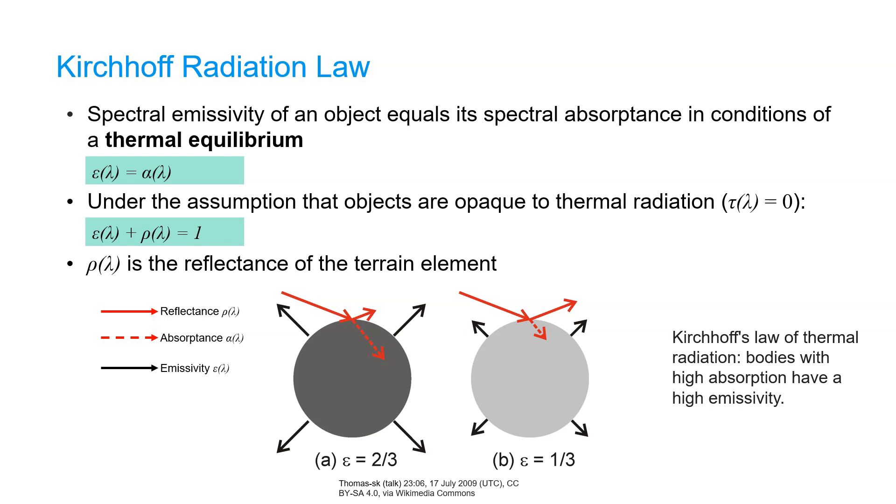We can also see, in the case of high emissivity, that the reflectance is lower, because emissivity and reflectance are complementary and add up to 1. When we look at the figure on the right side, we see therefore that when emissivity is low, the absorptance is much lower, and we see that the reflectance is higher.